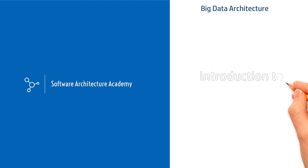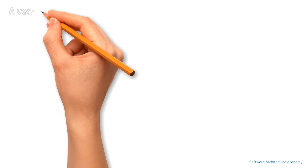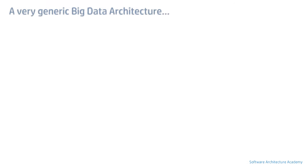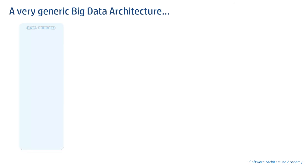Hi everyone, this is an introduction to big data architecture video. We will use a very generic reference architecture and talk about various layers in detail. First we will discuss the different types of sources that can send data. The real power of big data is to ingest tons of data from a variety of diverse sources.